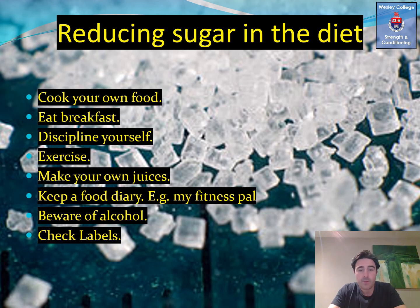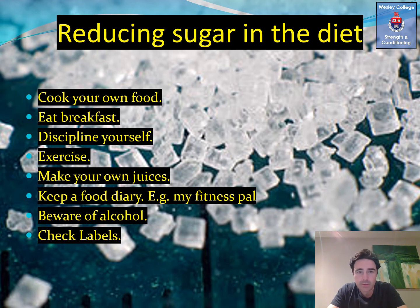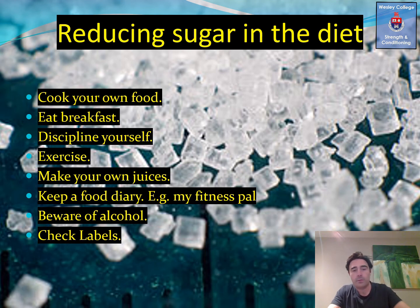Make your own juices — shop-bought juices are really high in sugar. Check the labels for nutritional value. Keep a food diary: write it down or track it on MyFitnessPal or similar apps. Unfortunately we live in a world where sugar is hidden everywhere, but with a bit of discipline we can learn to avoid it. The last thing I'd like to do is show you a quick video.